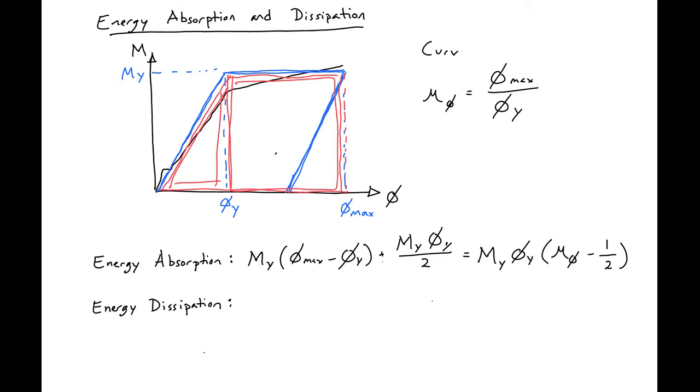So our curvature ductility is a pretty good measure of the ductility of the section as it tells us how much inelastic deformation can occur before failure. So a higher curvature ductility will mean a more ductile section.